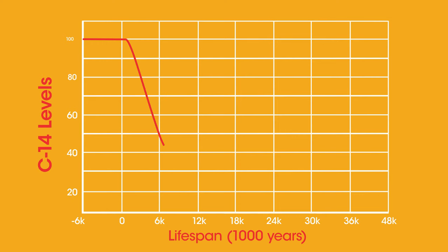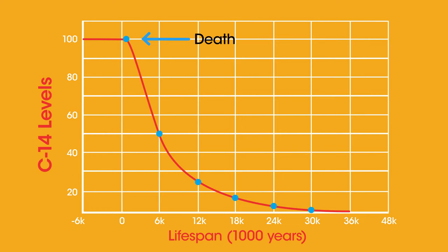While living, levels are constantly topped up, but upon death the amount decays away. The ratio of C-14 to C-12 gives us a way of estimating how many half-lives have passed since death. For example, if a lump of wood contains only 25 percent of the original content of C-14, then the wood has been dead for two half-lives, or 11,460 years.